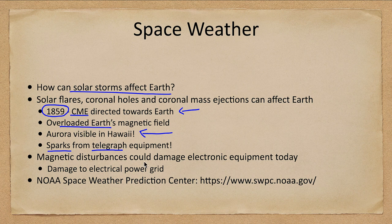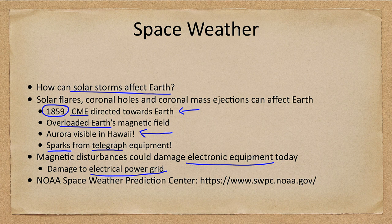Today, a magnetic disturbance could cause significant damage to electrical equipment and the electrical power grid. A strong enough coronal mass ejection coming toward Earth could fry many satellites and even equipment here on Earth, unless it is sufficiently hardened to protect against such events.